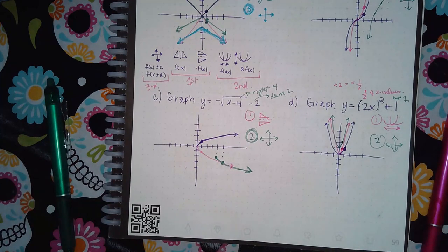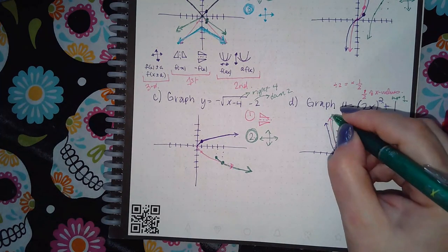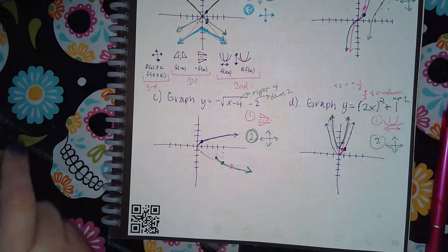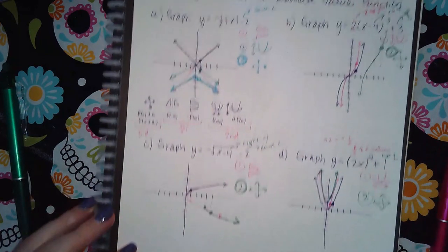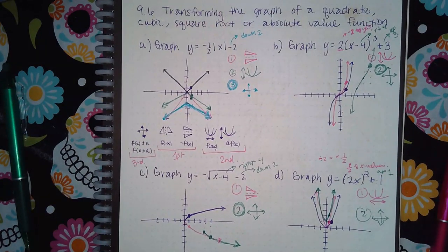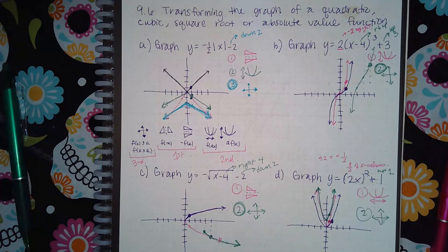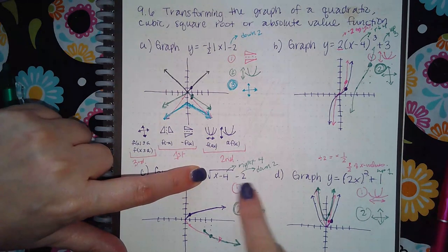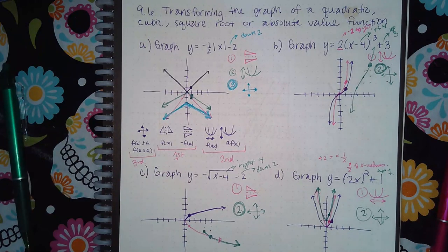The green one is the final answer. You may have to use multiple buttons depending on how much is involved in the problem — sometimes all three, sometimes just two. It just depends on the individual problem. If the negative wasn't there, I wouldn't have needed that reflection step at all — I could have just used one button and gotten my answer.